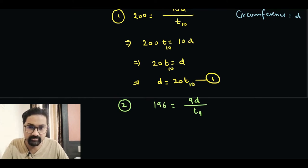Let's multiply both sides with T, so 196 T9 is 9D. Can we divide both sides with 9? Not really. So let's hold on to this. In fact, let's flip the equation so 9D is equal to 196 T9.